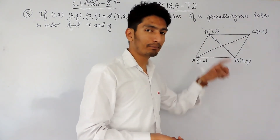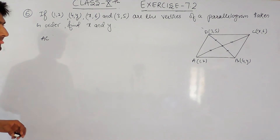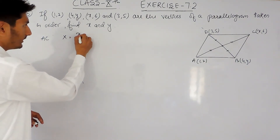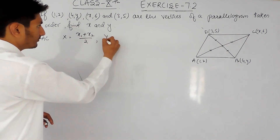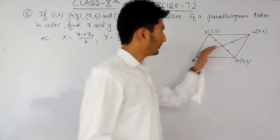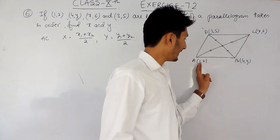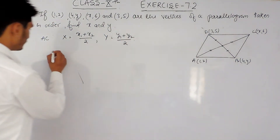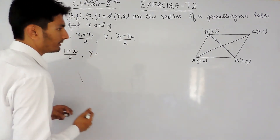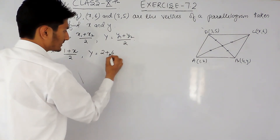This will be a comparatively shorter method than the previous one. So let's find the midpoint for line AC. The midpoint formula: if you want to find the midpoint, the x-coordinate will be (x1 + x2) / 2 and the y-coordinate will be (y1 + y2) / 2. For points A and C, the y-coordinate of the midpoint will be (2 + 6) / 2.